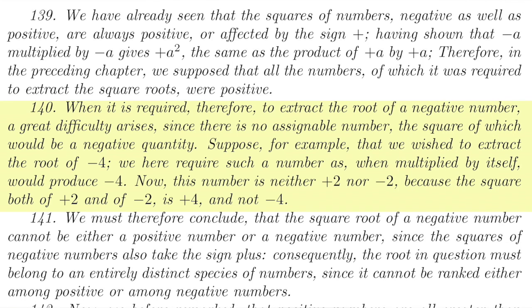When it is required, therefore, to extract the roots of a negative number, a great difficulty arises. Since there is no assignable number, the square of which would be a negative quantity. Suppose, for example, that we wish to extract the root of minus 4. We here require such a number, as when multiplied by itself, would produce minus 4. Now this number is neither plus 2 nor minus 2, because the square of both plus 2 and minus 2 is plus 4, and not minus 4. We must therefore conclude that the square root of a negative number cannot be either a positive number or a negative number, since the squares of negative numbers also take the sign plus.